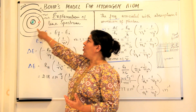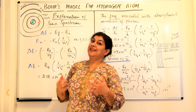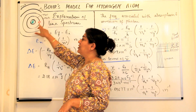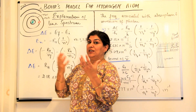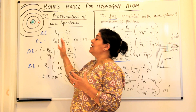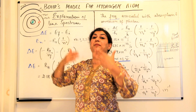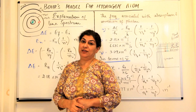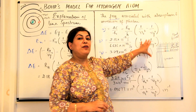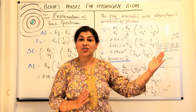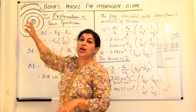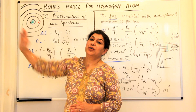As long as the electron is in that fixed orbit, it neither gains energy nor loses energy. But when it absorbs energy, it jumps from a lower energy level to a higher energy level, and then it emits the same energy and jumps back to lower energy levels. When hydrogen atoms do that, the spectrum of hydrogen is obtained, which has multiple lines explained by electrons jumping from higher levels to lower levels.